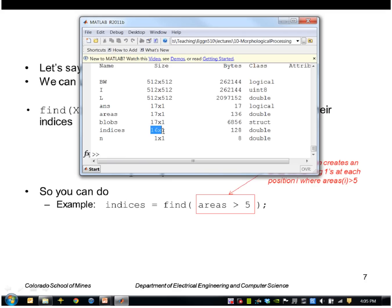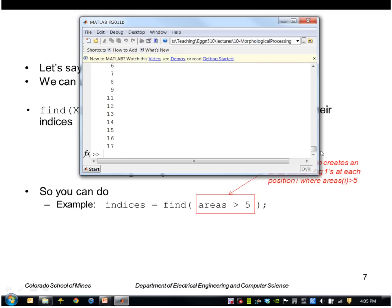So now I run a find on that. And that creates a list of indices. Those are the indices from areas for those points that are greater than five. So I got all of them except for index number 10.